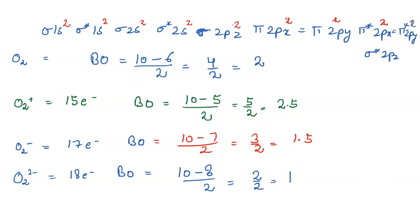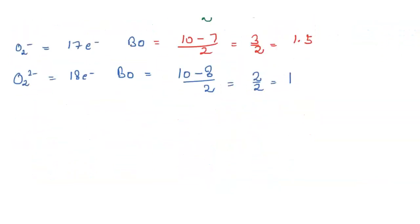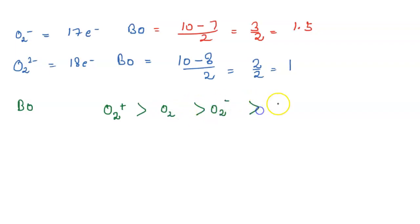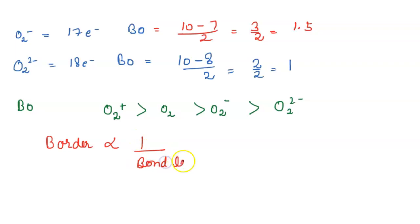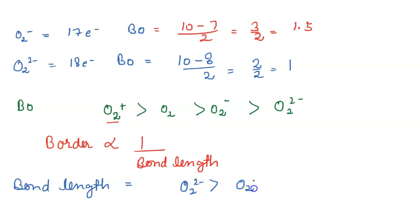So the order of bond order from highest to lowest is: O2 positive (2.5) > O2 (2) > O2 negative (1.5) > O2 2 negative (1). Since bond order is inversely proportional to bond length, the bond length order is: O2 2 negative > O2 negative > O2 > O2 positive.